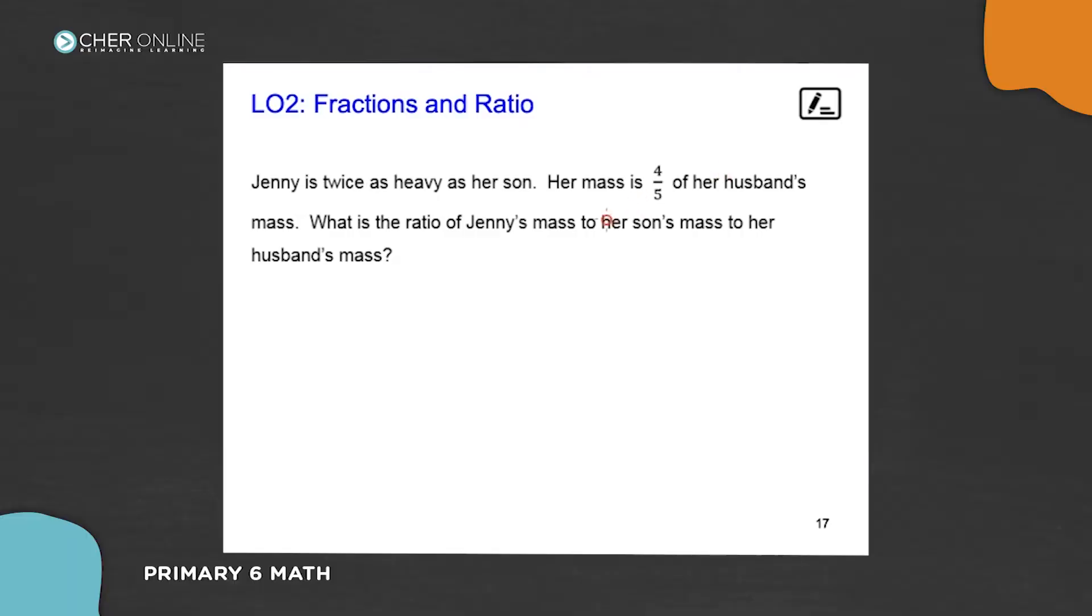Jenny is twice as heavy as her son, her mass is four-fifths of her husband's mass. What is the ratio of Jenny's mass to her son's mass to her husband's mass?